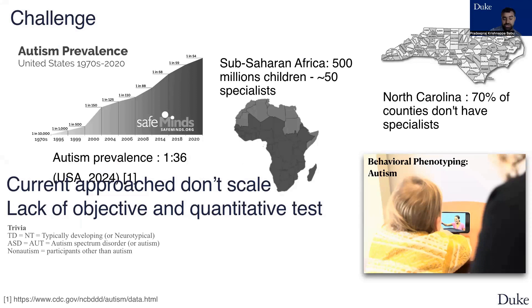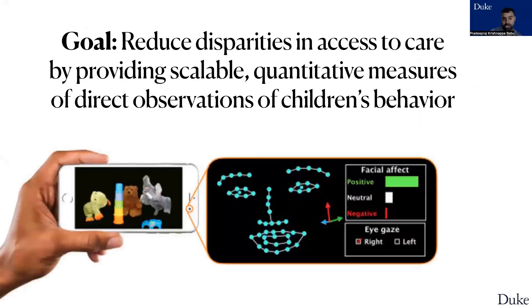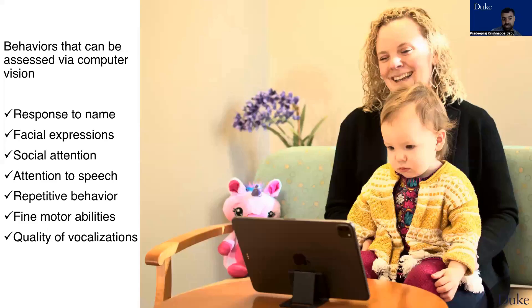Currently available tools or measures are not scalable, which calls for a behavioral phenotyping tool for autism — using the advancement in technology to develop a mobile tool that can be scalable and offer quantitative measures based on the child's behavioral response.